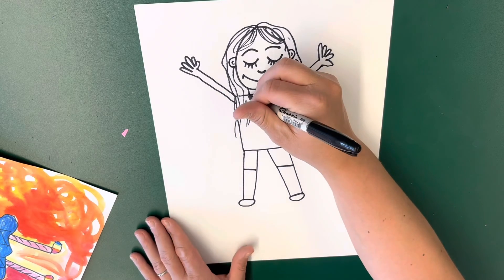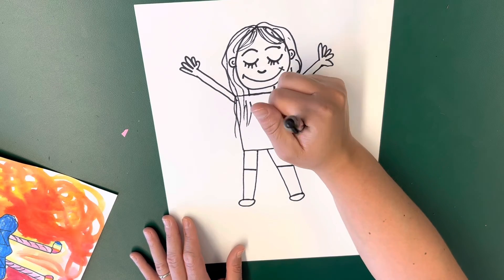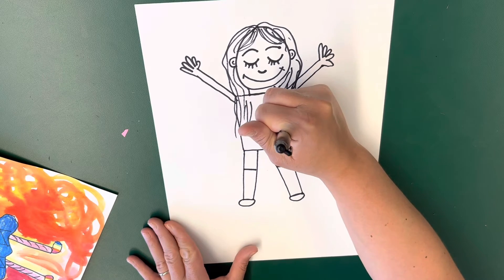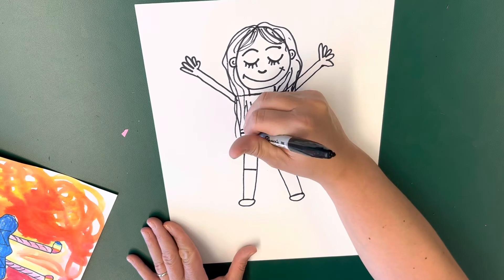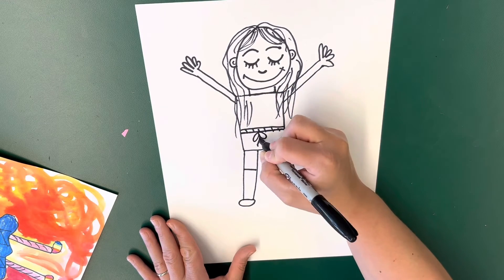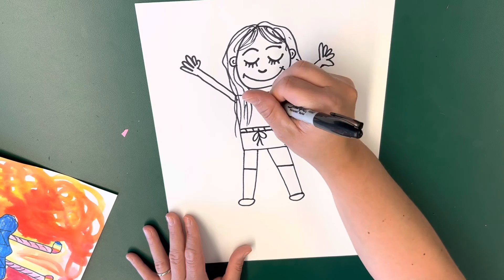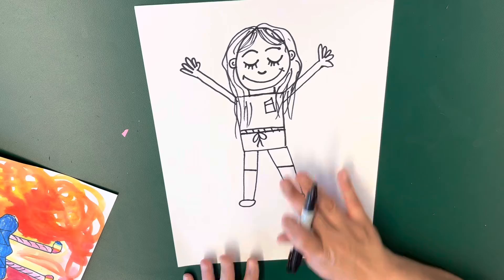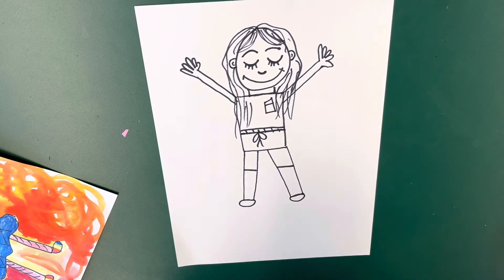And now what I'm going to do is I'm going to add some detail into my outfit. So maybe I'm wearing shorts, I have my pant line here. Do not need to copy me. Maybe I have a pocket on my shirt, so go ahead and add some details in your shirt and your pants to separate it from your body.